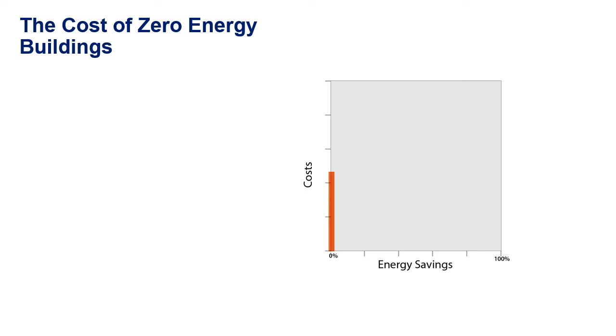We can represent a typical building by the red bar sitting at 0% energy savings. This represents a building that meets the current energy code. The height of the bar is a typical cost of building this building. We'll draw a horizontal blue line to benchmark the cost of this baseline building. And to create four quadrants on the graph, we'll also add a vertical blue line at 0% energy savings. Our baseline code-compliant building sits at the intersection of these axes.